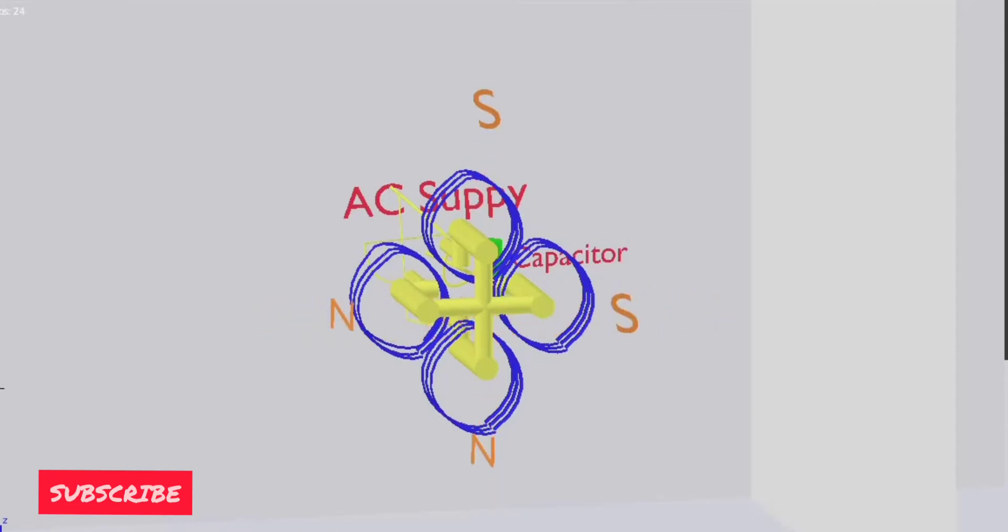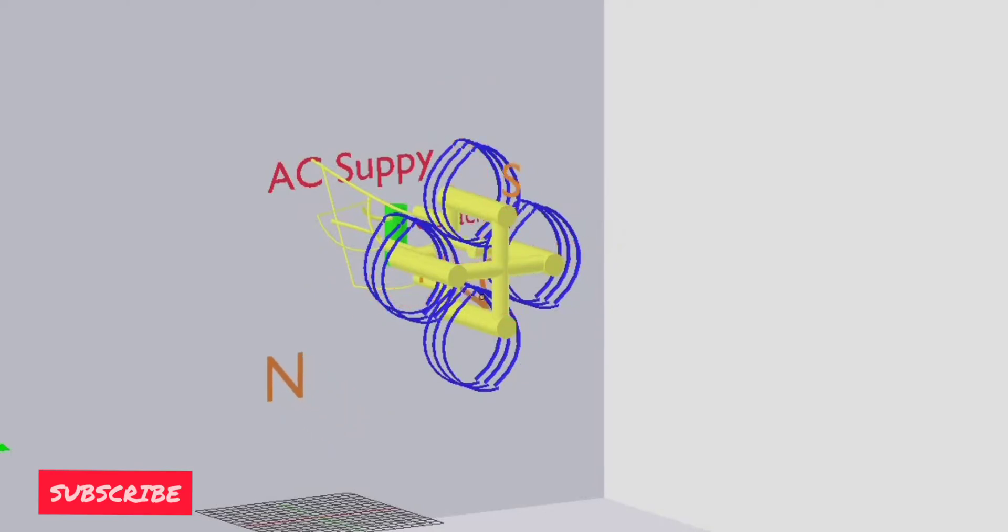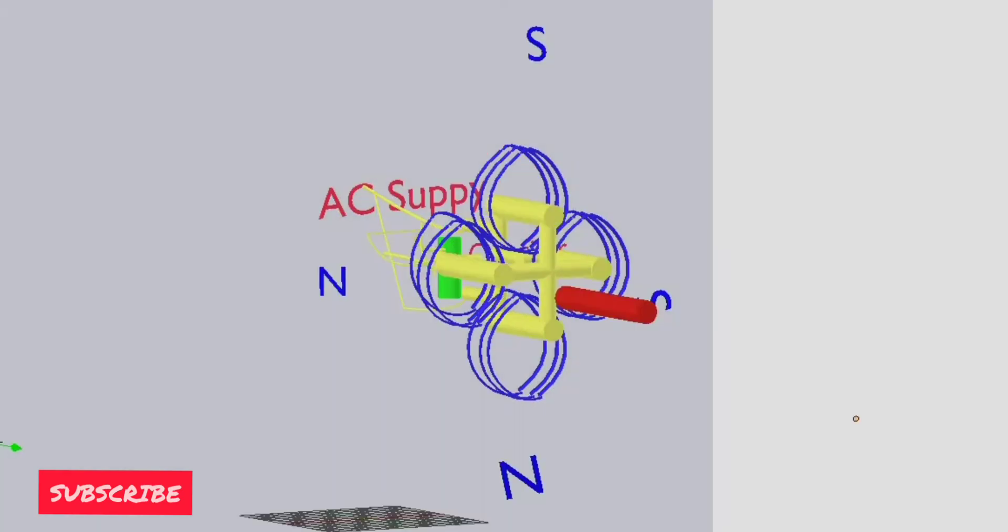Now if we look properly, we can see that the north pole is revolving continuously. The magnetic flux lines are rotating and the area becomes a continuously changing magnetic field. Faraday's law of magnetic induction states that if a conductor is placed inside a changing magnetic field, then voltage or EMF will be induced inside the conductor. So according to this law, the voltage will induce inside the conductor.